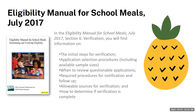The eligibility manual for school meals, which was last published in July of 2017, is your best friend. There has been no update to the manual and it will be used for this school year. Refer often to section six of that manual for specific details on how to perform the verification of free and reduced price household applications. We recommend having the eligibility manual bookmarked on your web browser and using the find function by pressing Control F to search for key terms.